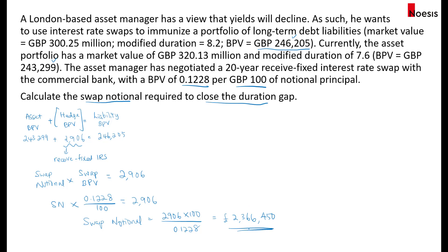If the fund manager wants to lower the amount of notional required, he will have to use a longer duration swap — rather than a 20-year, perhaps negotiate for a 30-year receive fixed interest rate swap. Bear in mind that the longer the duration of the swap, the more sensitive the swap value will be when there are changes in the swap rates.